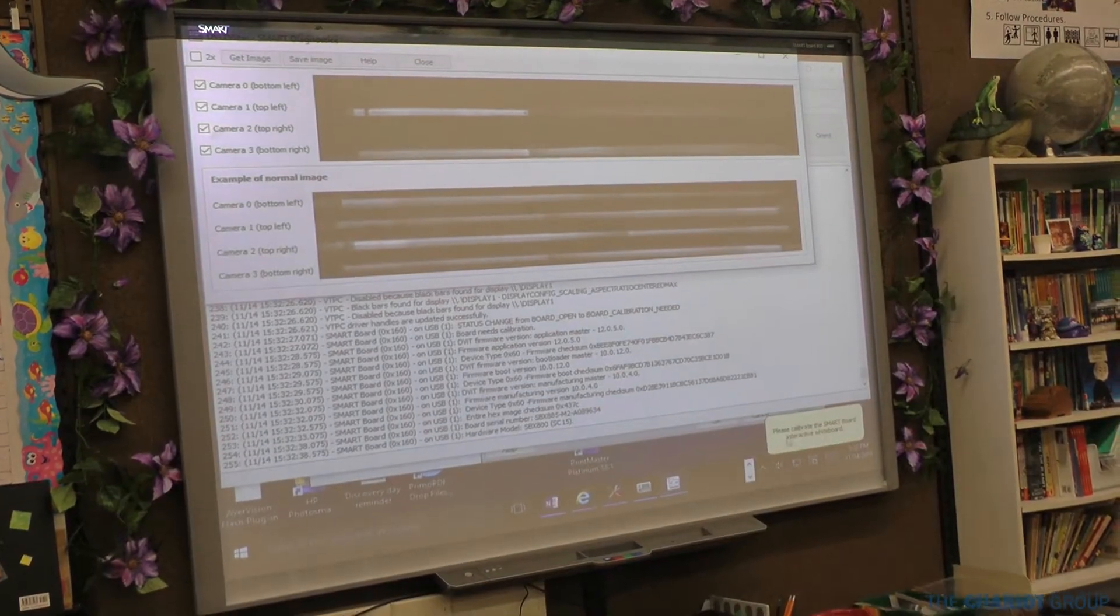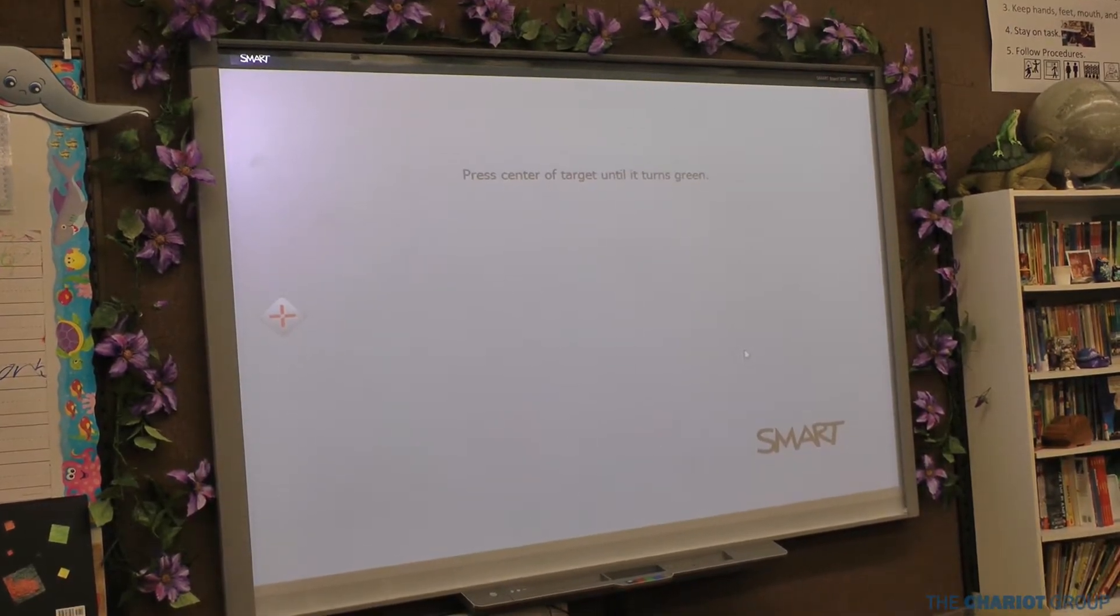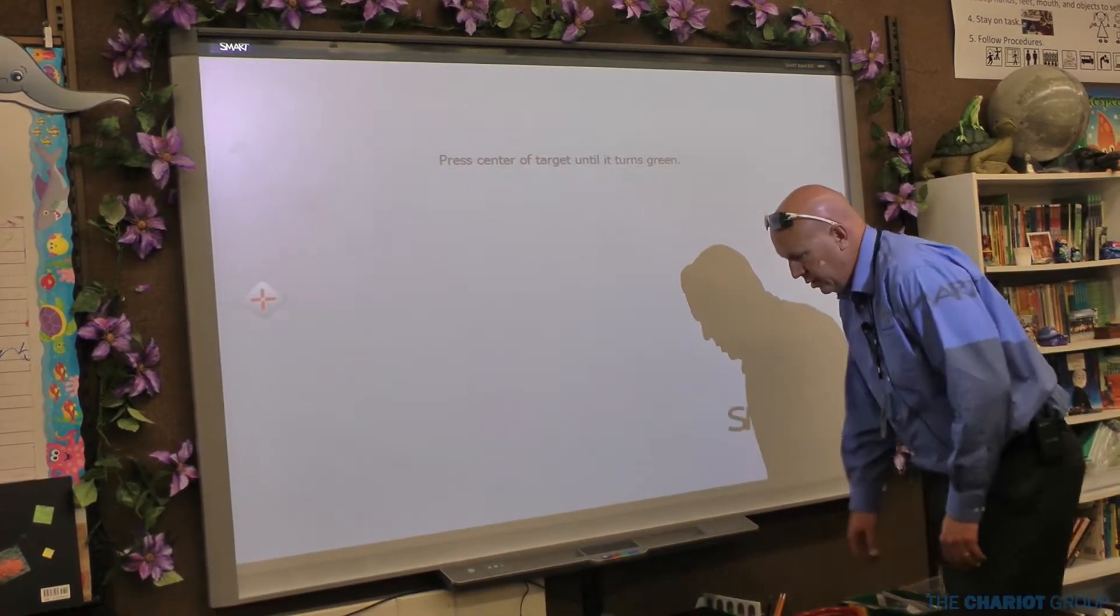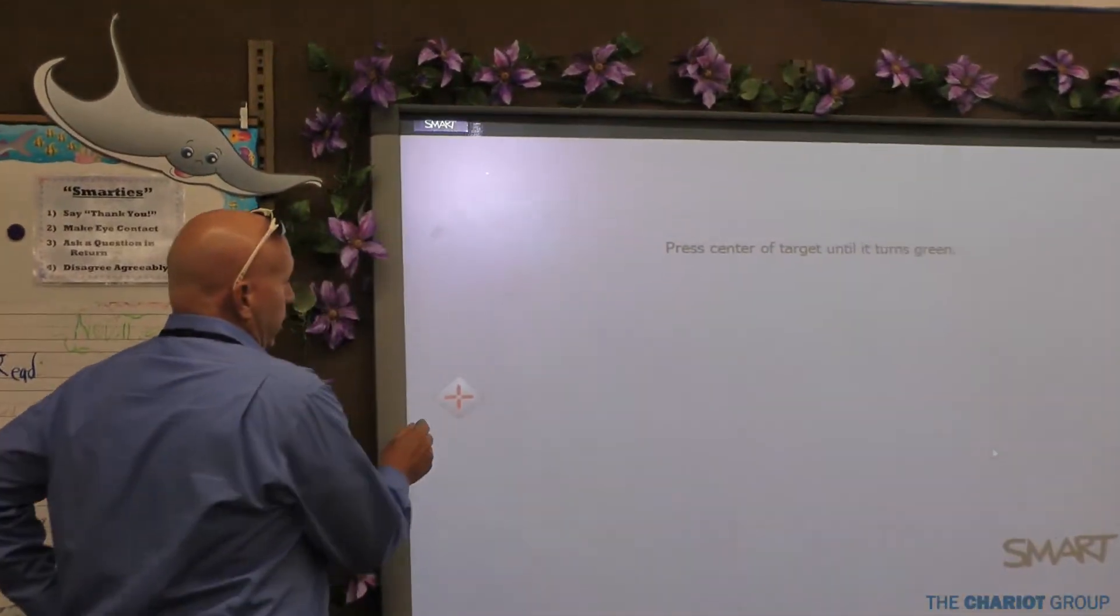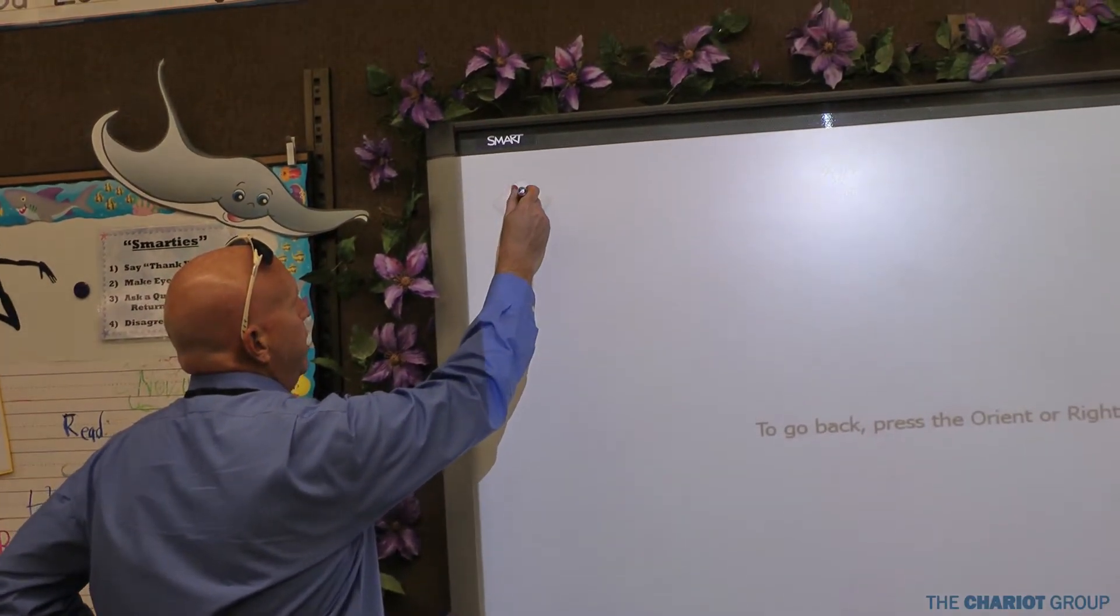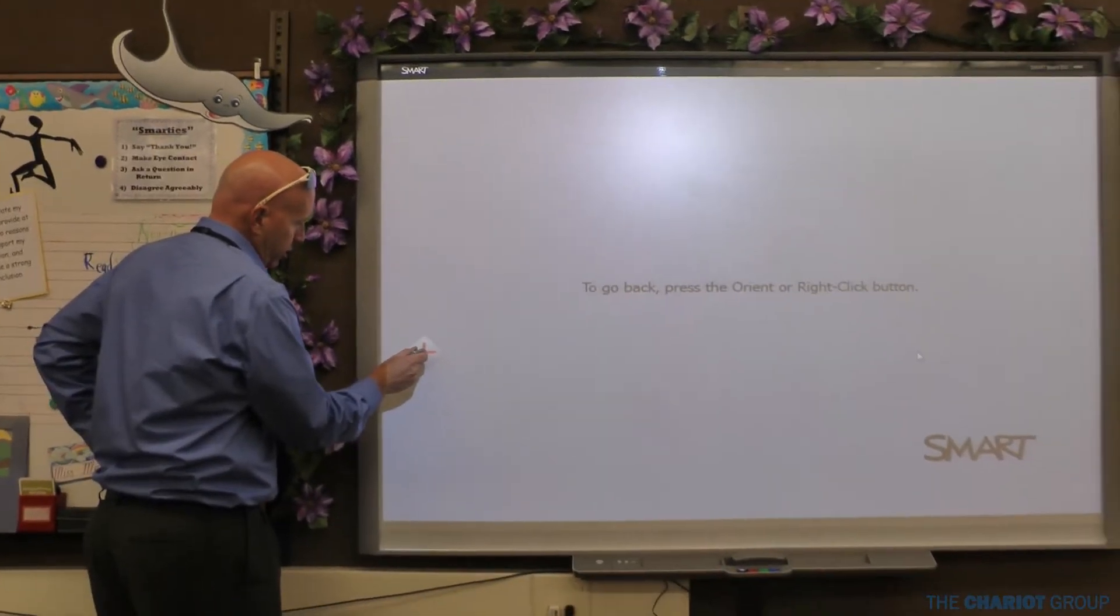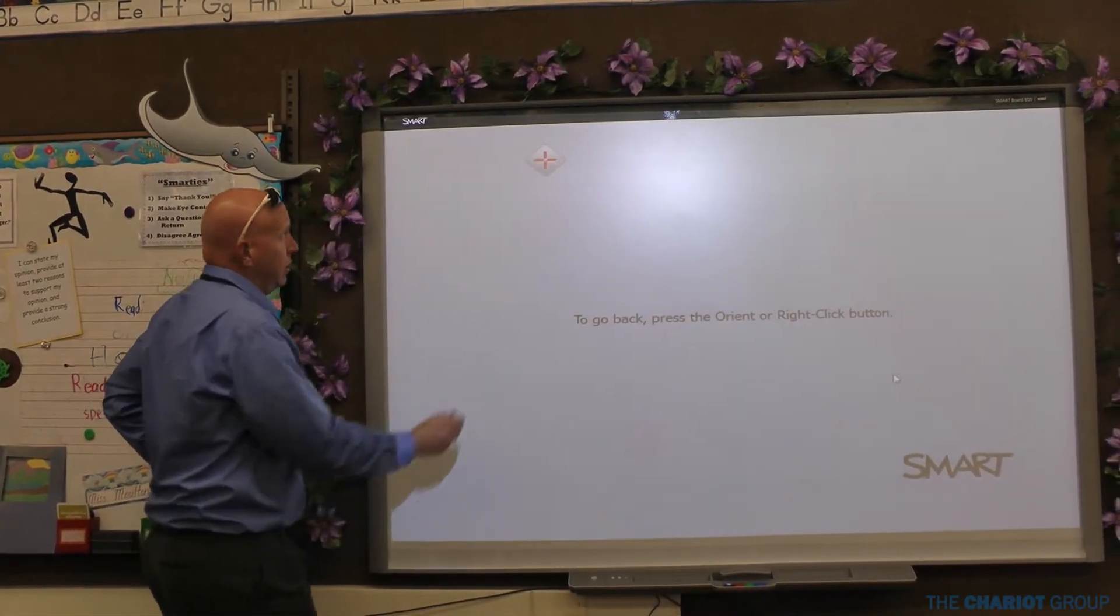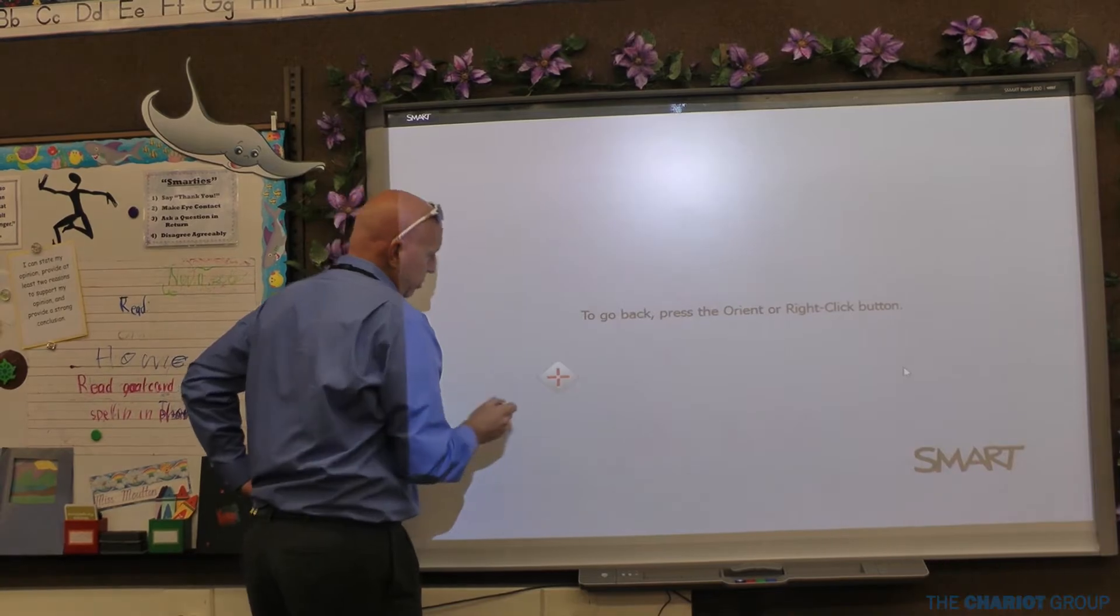What I'll do now, as you can see, it says please calibrate the Smart Board. I'm going to click on that. I'm going to grab my pen out of the pen tray. And this one is a little different than the orientation, so you're going to go and press the center until it turns green and then move to the next one, and you're going to repeat this process on all of the dots. So this is a calibration, which is a little bit different than orientation. This is just testing all of the cameras that we just replaced and making sure they play nicely with one another.